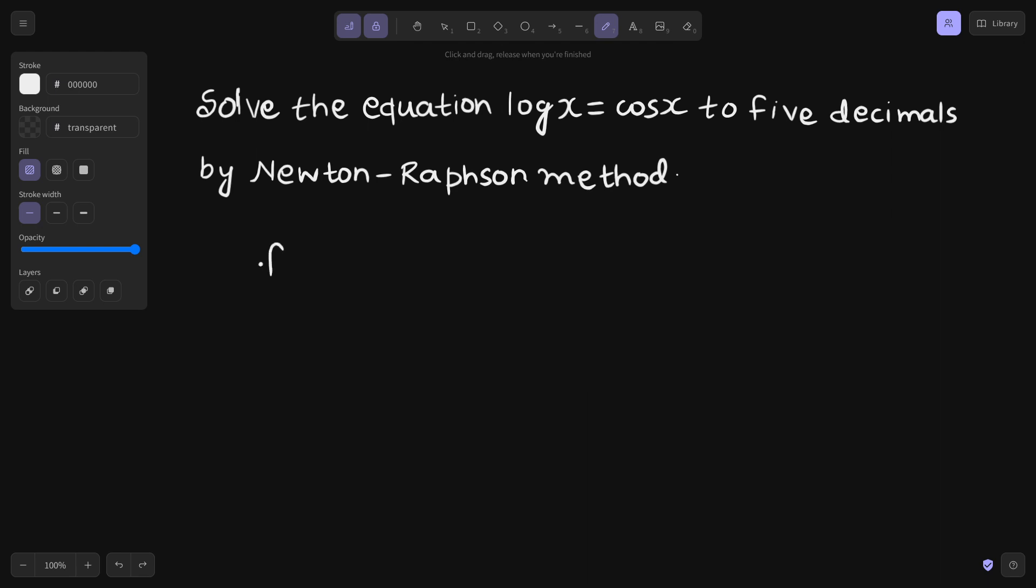So first write your function. Your function is log x minus cos x. Let's find the derivative because it will be required. So log x derivative is 1 by x, cos x derivative is negative sin x.